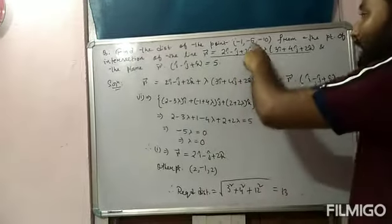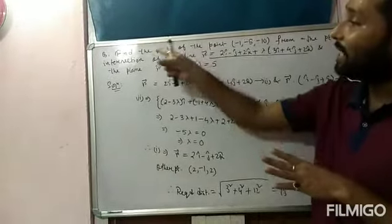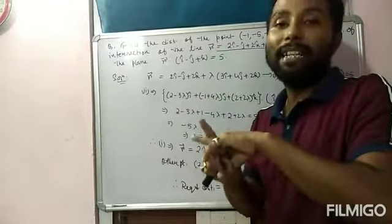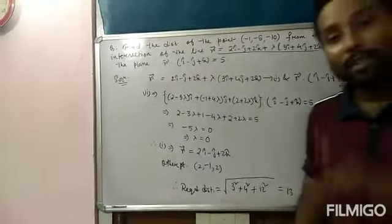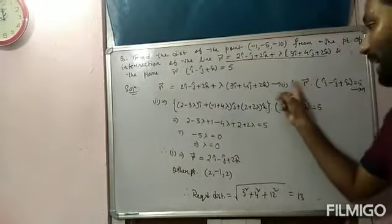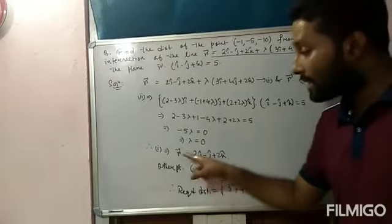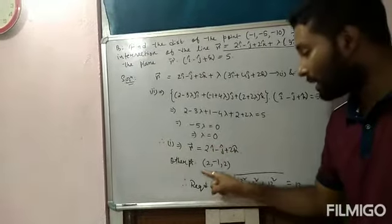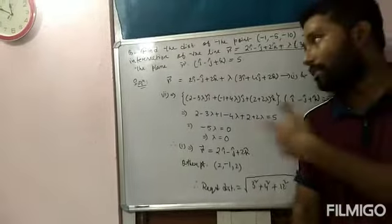So the required distance is 13 units. You are asked to find the distance between two points: one point is given directly, the second point you find from the intersection of line and plane, then use the distance formula to get the required distance. Some more questions I will discuss now.